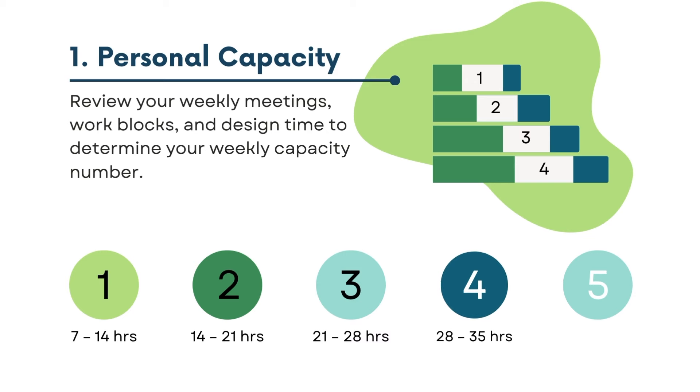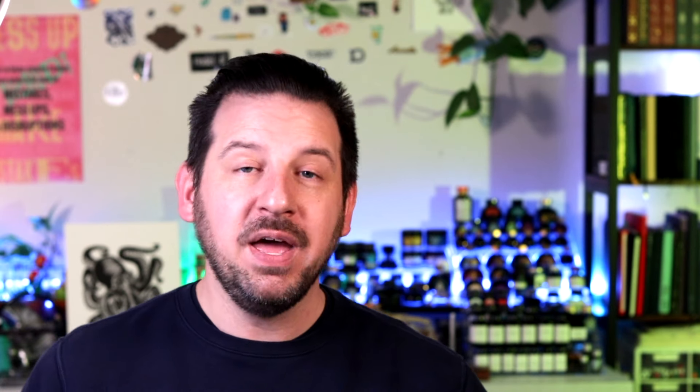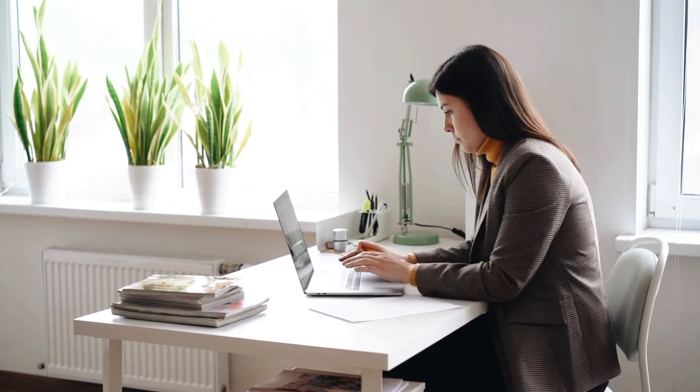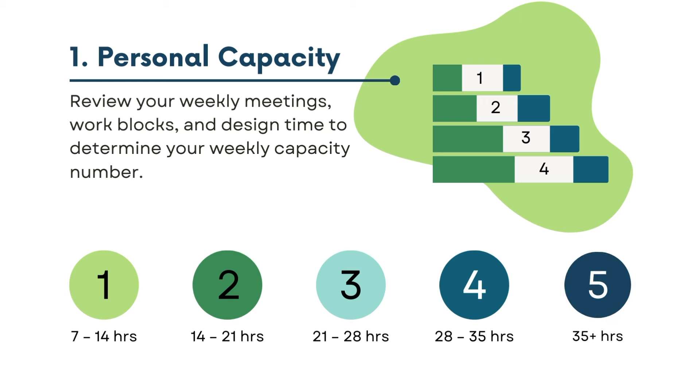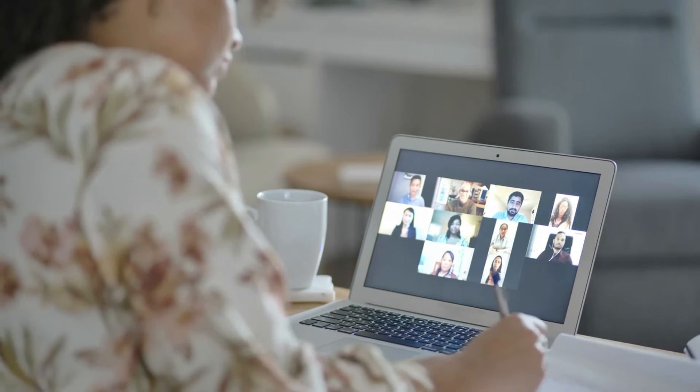A four means you're between 28 and 35 hours. For most people, that means you are very busy and very focused. A four usually communicates to your team, 'Hey, I have a lot to focus on this week — don't put anything extra on me.' And if you're at a five, that means you're at 35-plus hours of work time that week. It is okay to be a five for a week or two. But if you're going over two weeks at a five, I have a conversation with that individual to understand everything that's going on and potentially have someone at a one or two help them out.